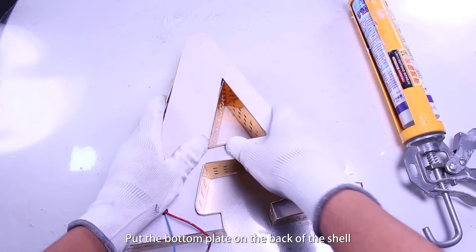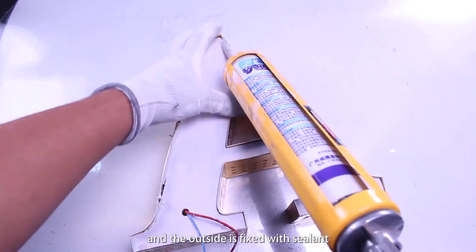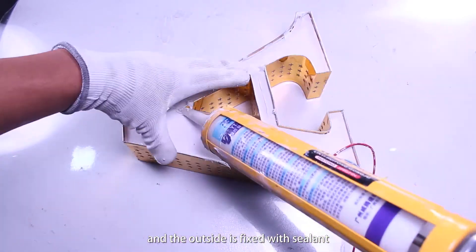Put the bottom plate on the back of the shell and the outside is fixed with sealant.